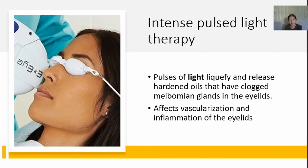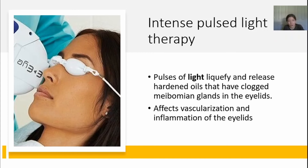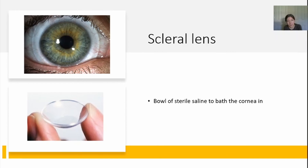Not only can you deliver heat directly to the meibomian glands, you can also deliver light. Pulses of light can liquefy and release the hardened oils in the meibomian glands. They both target the meibomian glands, but this method uses light rather than heat. This was initially discovered by dermatologists doing this procedure for skin patients, whose dry eyes also improved significantly afterwards. It has now developed into a very commonly used procedure, though again it may not be covered by insurance and can be costly.